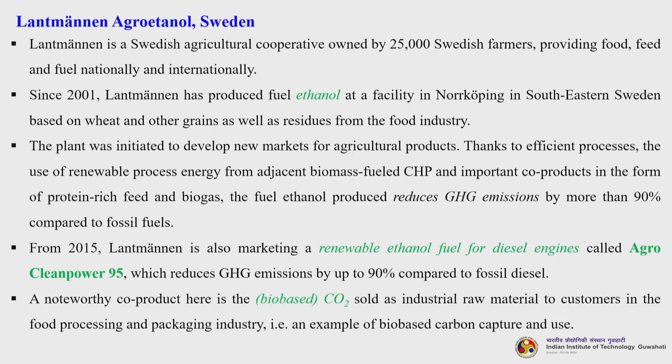The next success story is Lantmännen Agroethanol in Sweden. Lantmännen is a Swedish agricultural cooperative owned by 25,000 Swedish farmers, providing food, feed and fuel nationally and internationally. Since 2001, Lantmännen has produced fuel ethanol at a facility in Norrköping in southeastern Sweden, based on wheat and other grains as well as residues from the food industry. The plant was initiated to develop new markets for agricultural products. Thanks to efficient processes, use of renewable energy from adjacent biomass-fuel CHP, and important co-products in the form of protein-rich feed and biogas, the fuel ethanol produced reduces greenhouse gas emissions by more than 90% compared to fossil fuel.